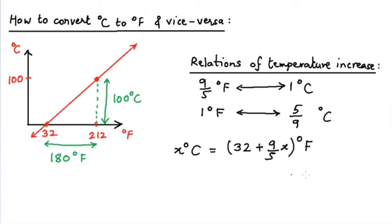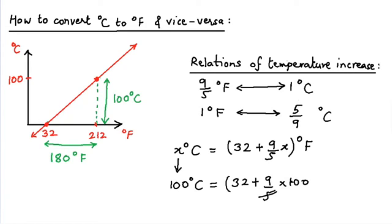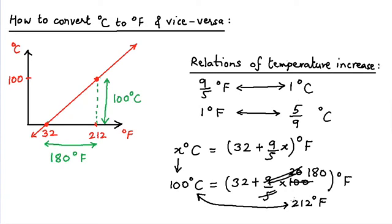To verify, let X equal 100. Then we get 100 degrees Celsius equals 32 plus (9/5)×100. The 5 and 100 cancel to give 20, and 9×20 = 180, so 32 plus 180 equals 212 degrees Fahrenheit. This is the correct boiling point, confirming our formula.